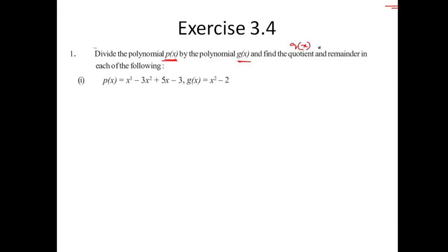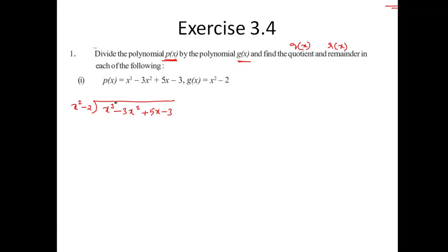Welcome. Let's look at Q of X and Remainder R of X. G of X is your divisor — I'm writing the divisor on the left-hand side as X squared minus 2. The dividend is F of X: X cubed minus 3X squared plus 5X minus 3.